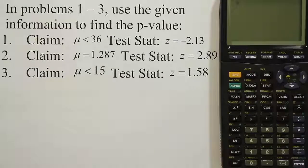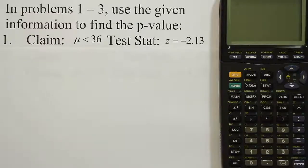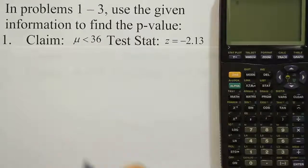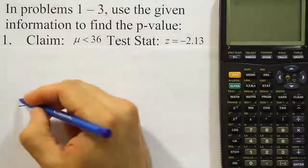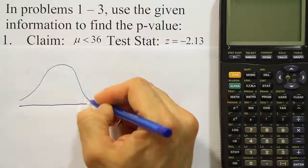Well, the fact that we're dealing with a test stat of negative 2.13, that indicates that we are talking about a test stat that's on the left-hand side of the curve. So we're going to draw our bell curve for the problem.